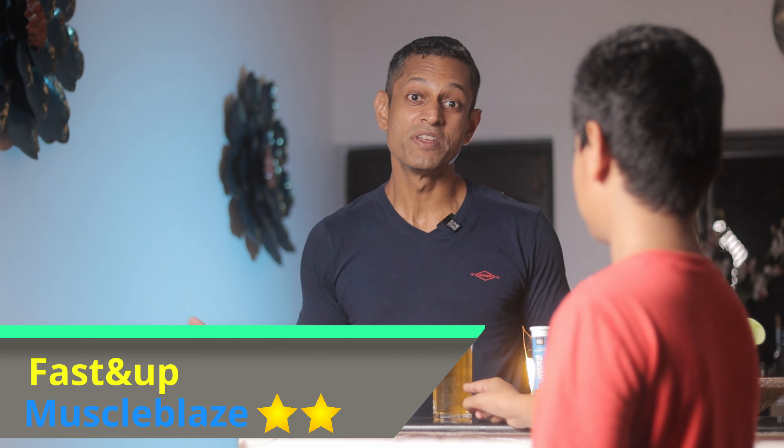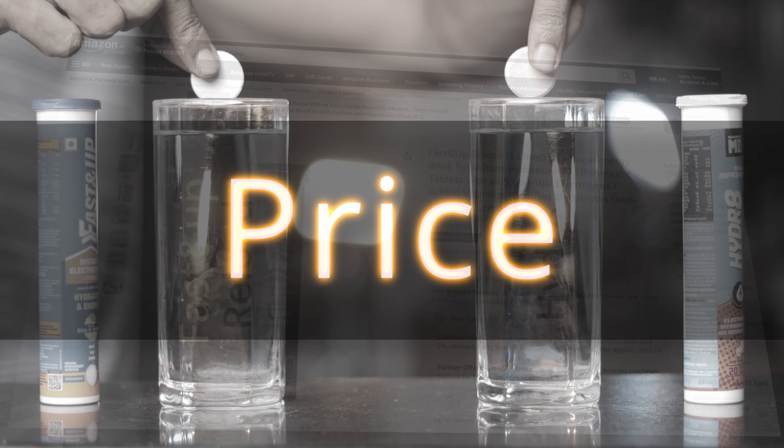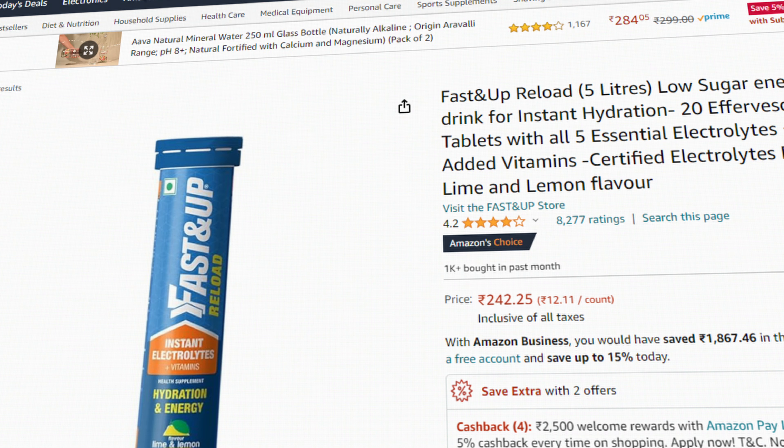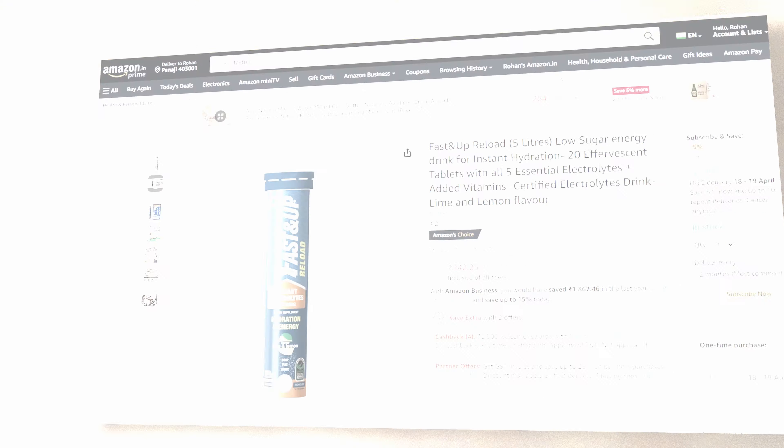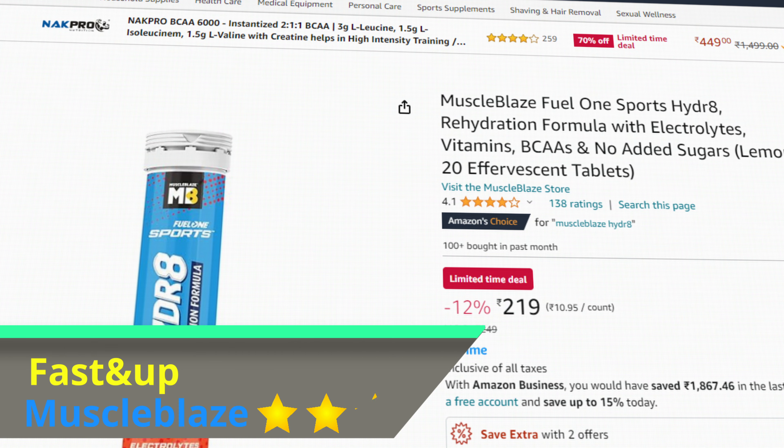But as I said, it may be subjective. Which leaves us with the most crucial factor, which is the price. Fast Up Reload comes in at around 242 rupees. While Muscle Blaze hydrate is available at 219 rupees on Amazon as of filming this video.